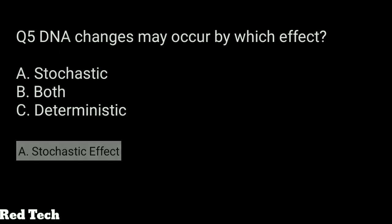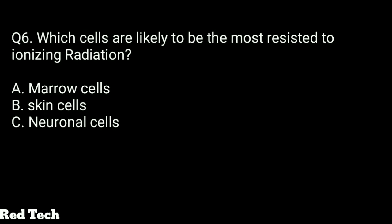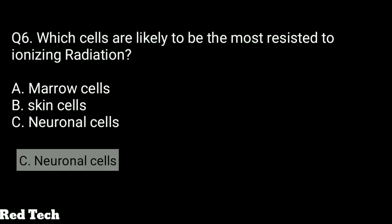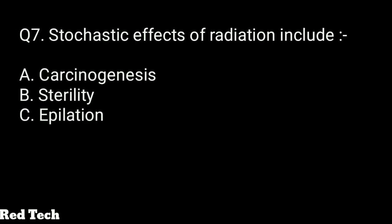Question number six: which cells are likely to be the most resistant to ionizing radiation? Options: marrow cells, skin cells, or neuronal cells. The right answer is neuronal cells — they are the most resistant, meaning they are least likely to be quickly ionized or mutated.